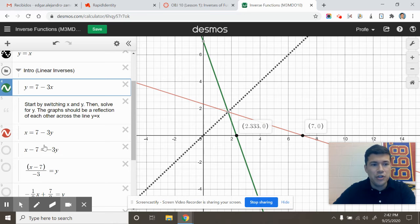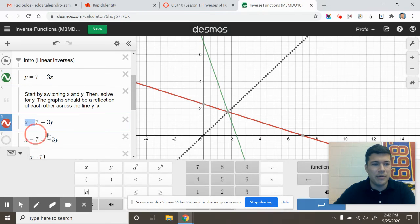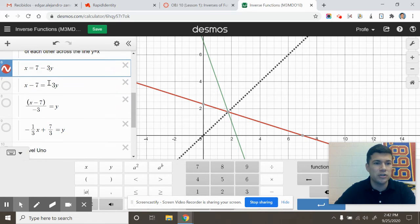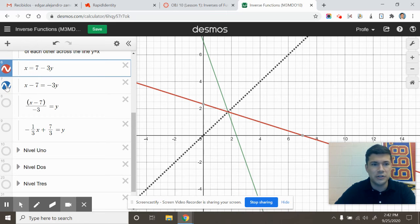Now, the catch here is you can't just say that x equals 7 minus 3y is the inverse function. The graph is right, but the notation is not correct because the correct notation for a function is y equals. So all you're going to have to do is solve this baby for y. You do that by inverting everything else that surrounds the y. So I will start by subtracting 7 to both sides, and I'm going to follow equivalent graphs.